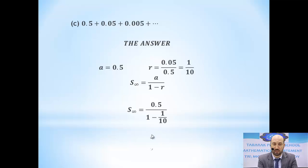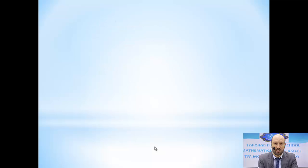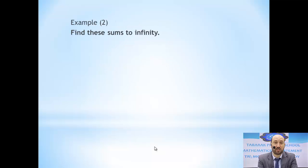The common ratio r equals 0.05 divided by 0.5, which is 1/10. So a = 0.5 and r = 1/10. Using the formula, type it in your calculator and you will get 5/9.